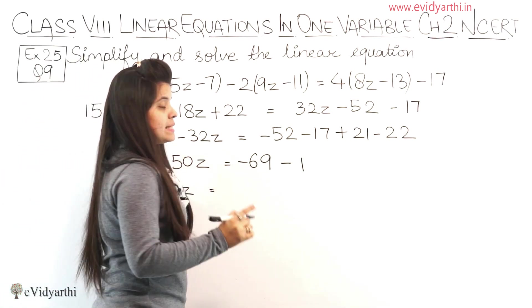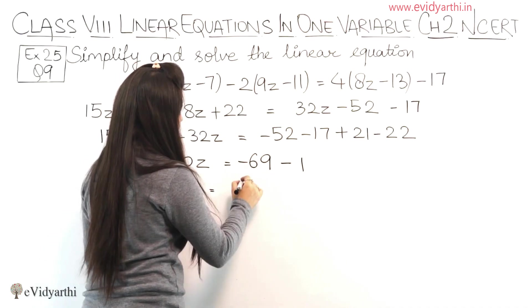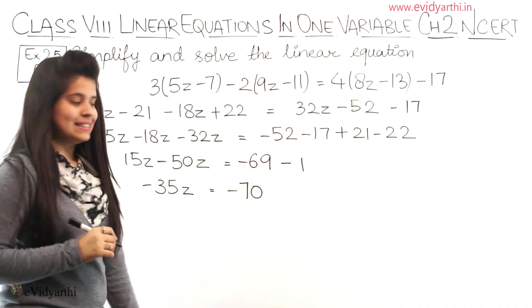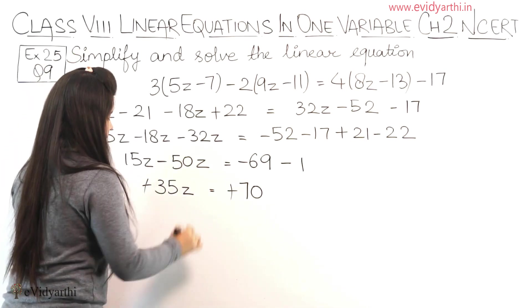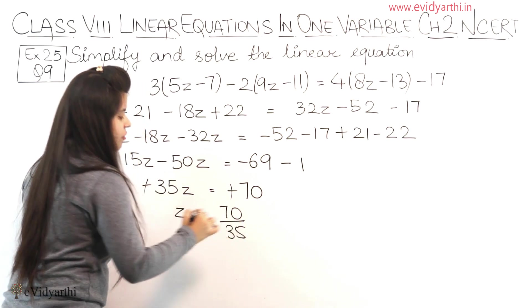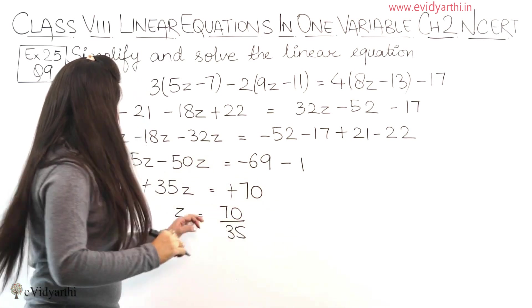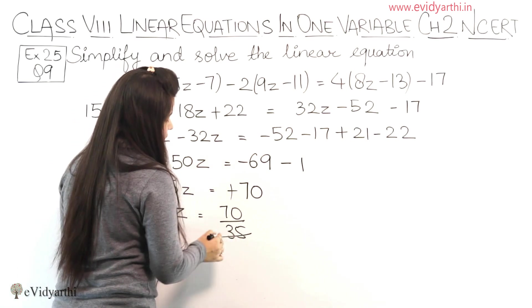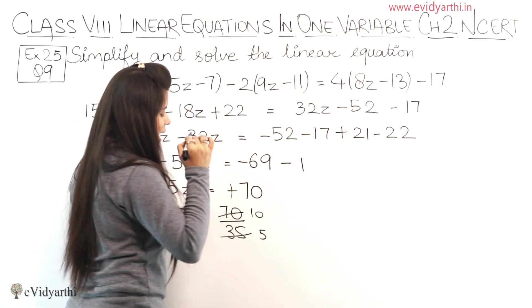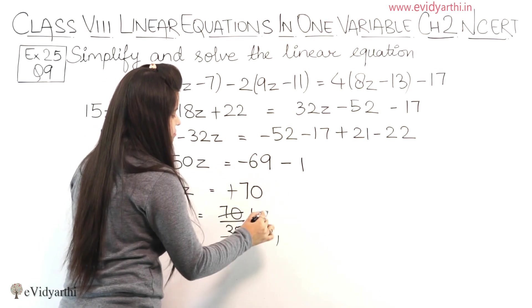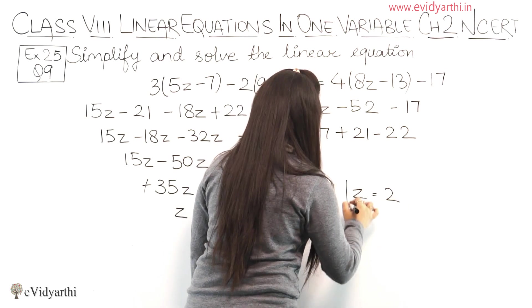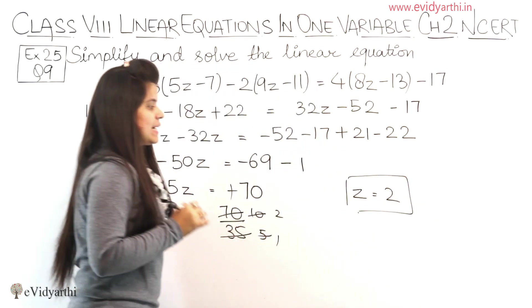Equals to minus minus plus. 69 plus 1 is 70, sign is minus. So minus and minus cancel. z will be equals to 70 divided by 35. Now dividing by 7: 7 times 5 is 35, 7 times 10 is 70. Then 5 times 2 is 10. So this means z equals to 2. The value of z is 2.